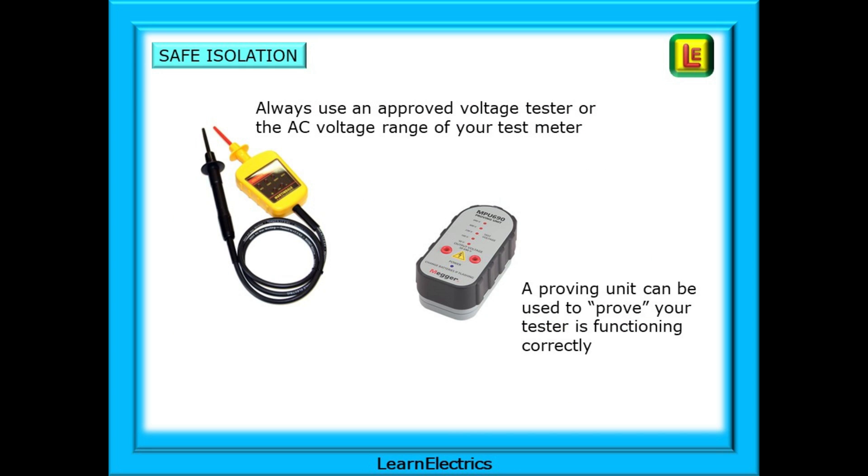Many of you will already carry out safe isolation on a regular basis, but for those that are new to the trade, we should always use an approved voltage tester or the AC range of your test meter. A proving unit can be used to prove that your tester is functioning correctly, but there are other ways to do this.